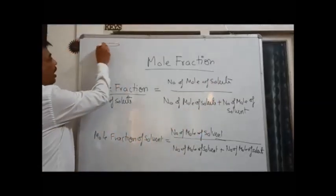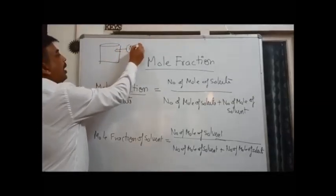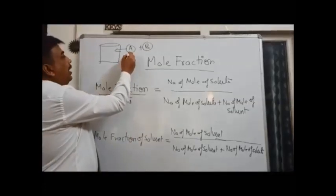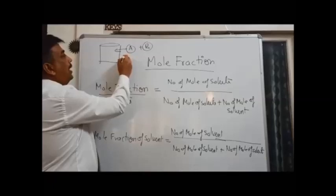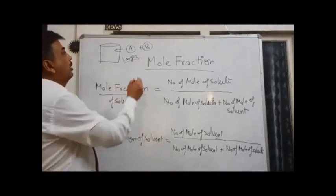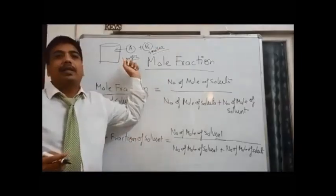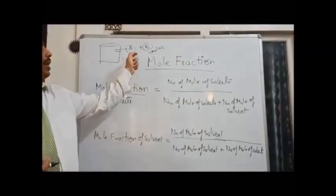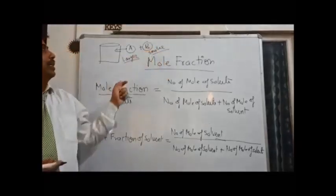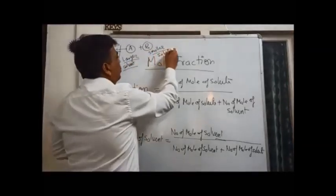Suppose I take a solution which is made up of component A and component B. Component A is in larger quantity and component B is in smaller quantity. So the component in larger quantity is considered as solvent, and component B in smaller quantity is considered as solute. So A is the solvent and B is the solute.